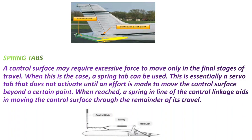There is a spring link between the control stick and the tab. A spring tab is nothing but a servo tab, but it activates only when the force reaches a certain point. When the force is reached at that point, the spring tab activates and controls the aircraft.